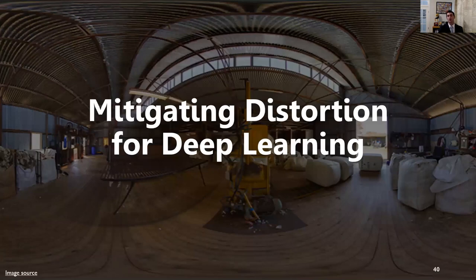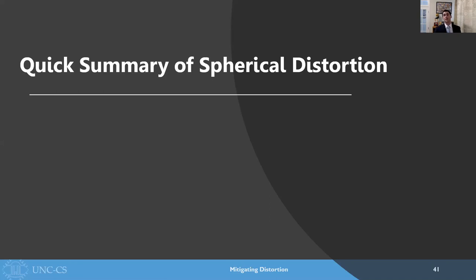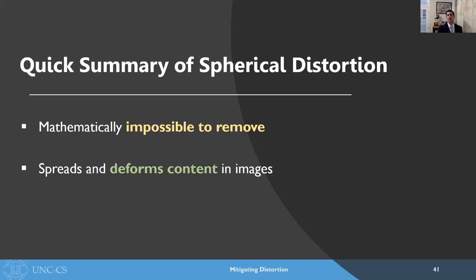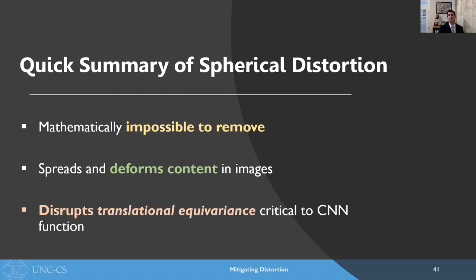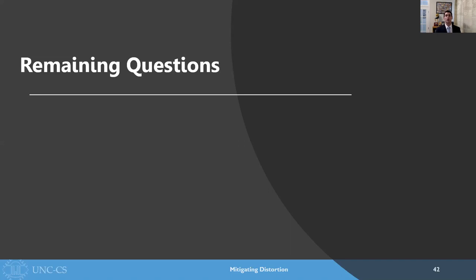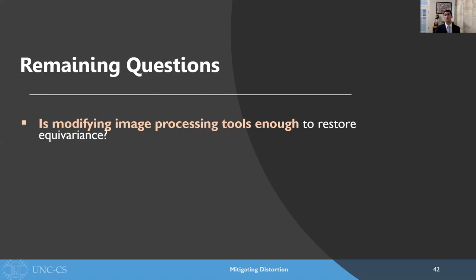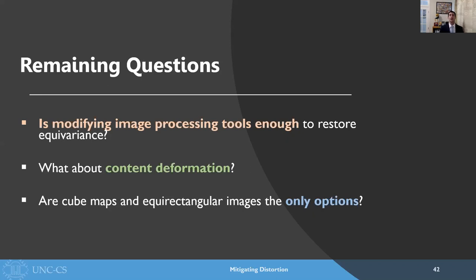So now let's move on to my contributions on this topic. But before we get into it, let's do a quick recap of spherical distortion. First, it's mathematically impossible to remove. Next, it spreads and deforms content in images, which disrupts translational equivariance that is critical to the proper function of convolutional neural networks. There are some remaining questions as well. First, is modifying the image processing tools enough to restore equivariance — this gets back to those location adaptive convolutions. What about content deformation? Do we need to address that in a representation? And if we're thinking about a representation, are cube maps and equirectangular images the only options? This is an important question because unlike traditional lens distortion, which is a consequence of the physical properties of the camera lens, spherical distortion is a function of our choice of representation. So maybe there's a better data representation than what we're currently using.